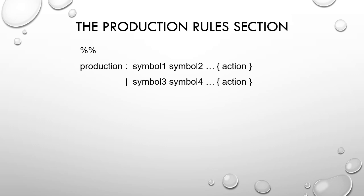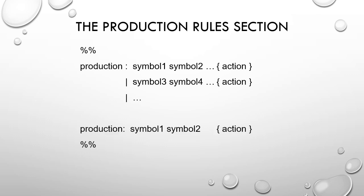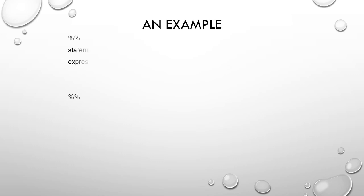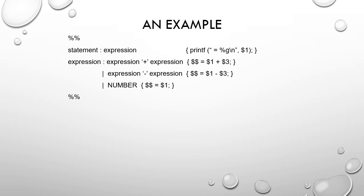Here is an example. The production produces symbol one and symbol two as the first production rule, and then the second production rule produces symbol three and symbol four, separated by a standing line (pipe). The %% above and the %% on the bottom are written to segregate the rules section from the other two sections of the .y file.